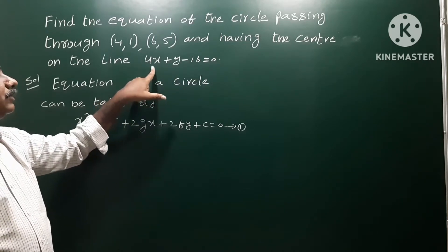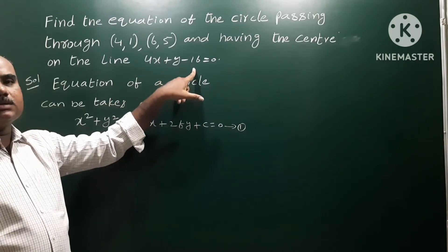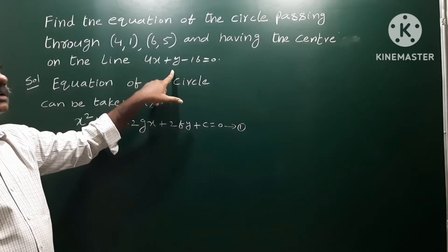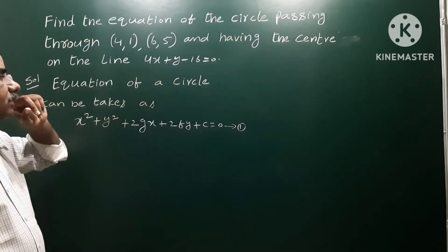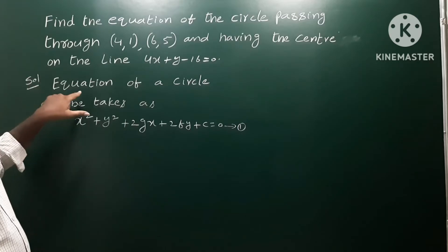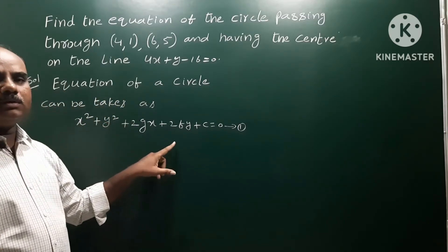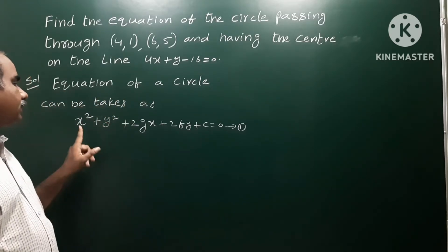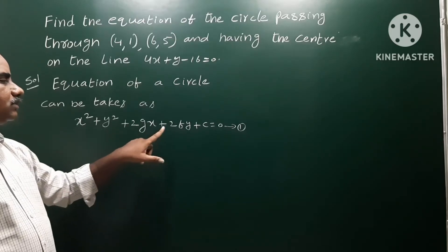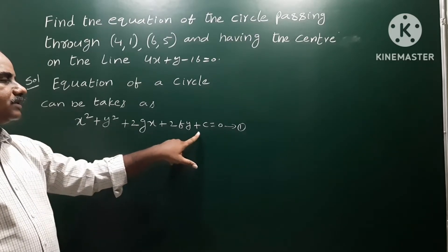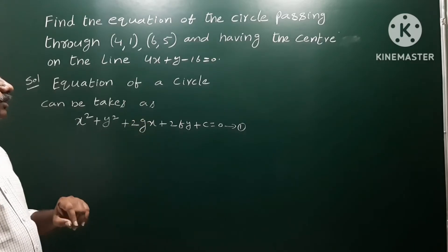The center lies on 4x plus y minus 16 is equal to 0. The equation of circle in general form is: x squared plus y squared plus 2gx plus 2fy plus c is equal to 0. Let us say this is equation number 1.